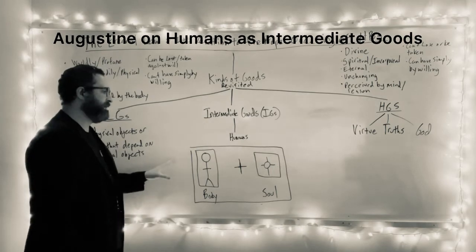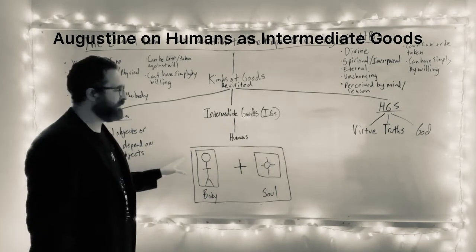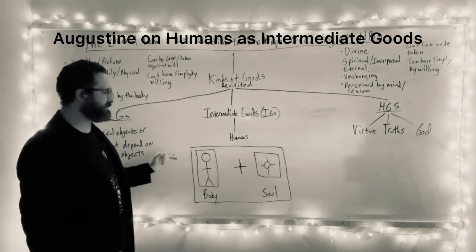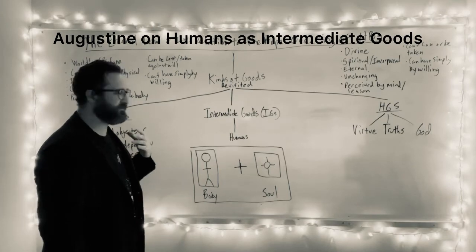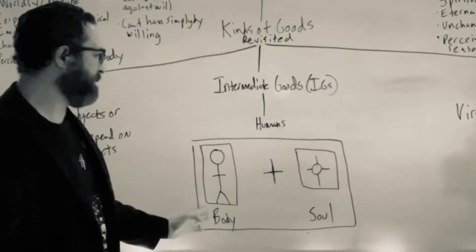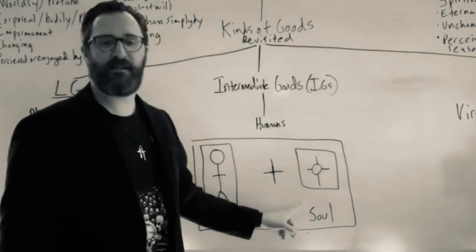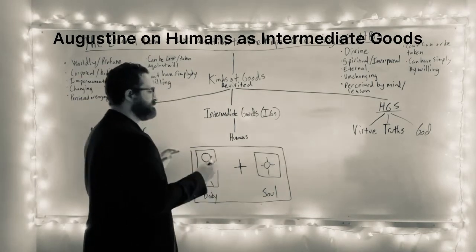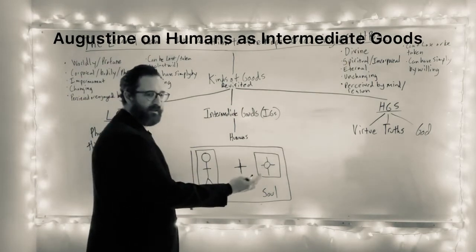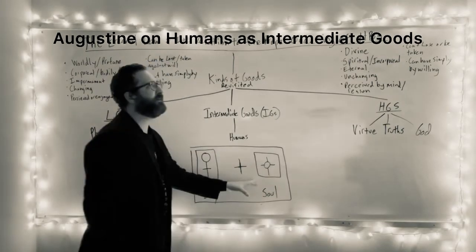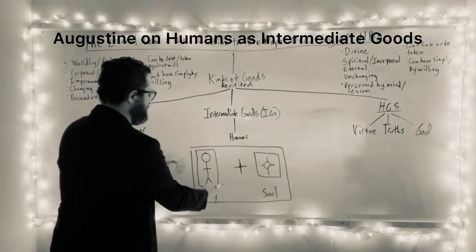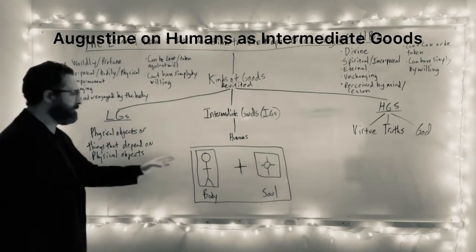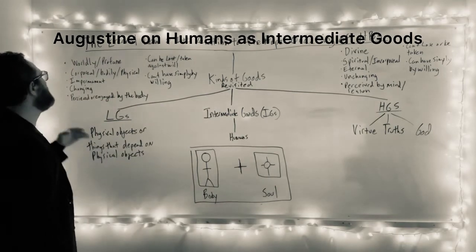The reason why goes back to Augustine holding a dualistic view of human beings. Remember, like Plato, Augustine takes human beings to be composed of two basic kinds of substance. Bodily substance and soul. And the reason human beings are intermediate goods is because one of their parts has some of the features of the higher goods and another of their parts has features of the lower goods.